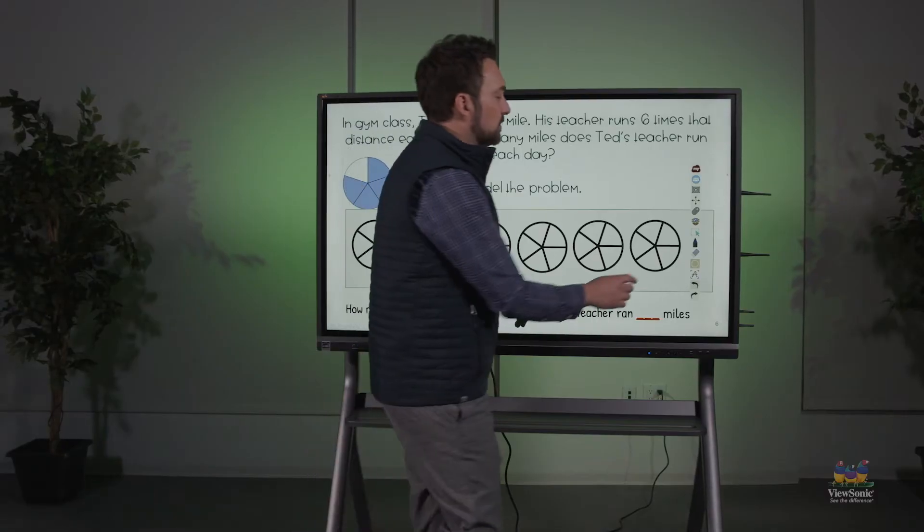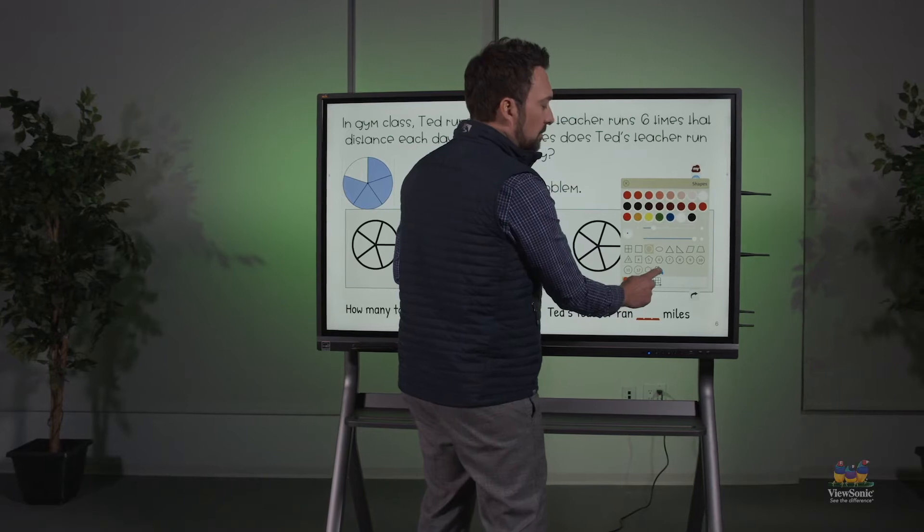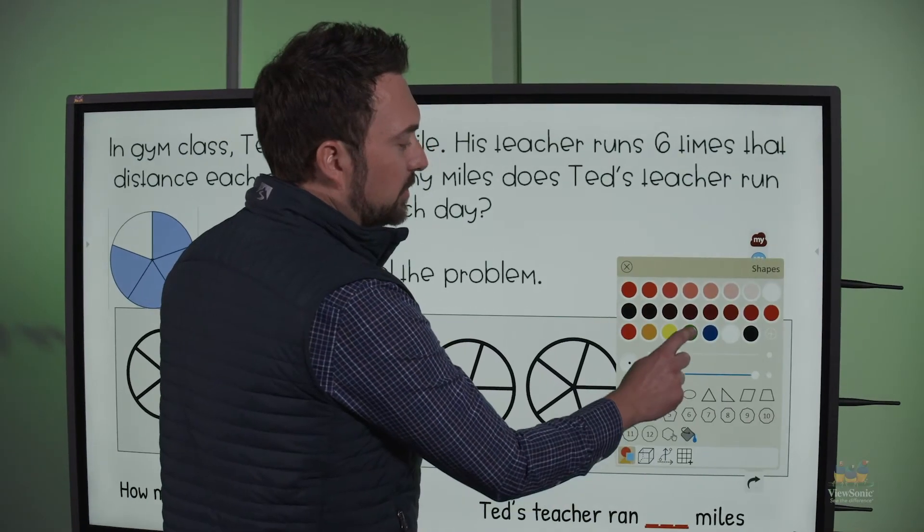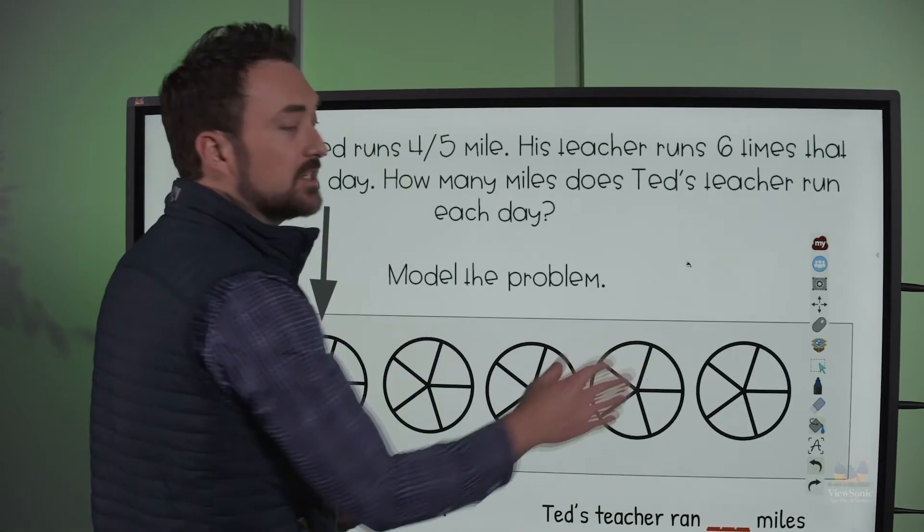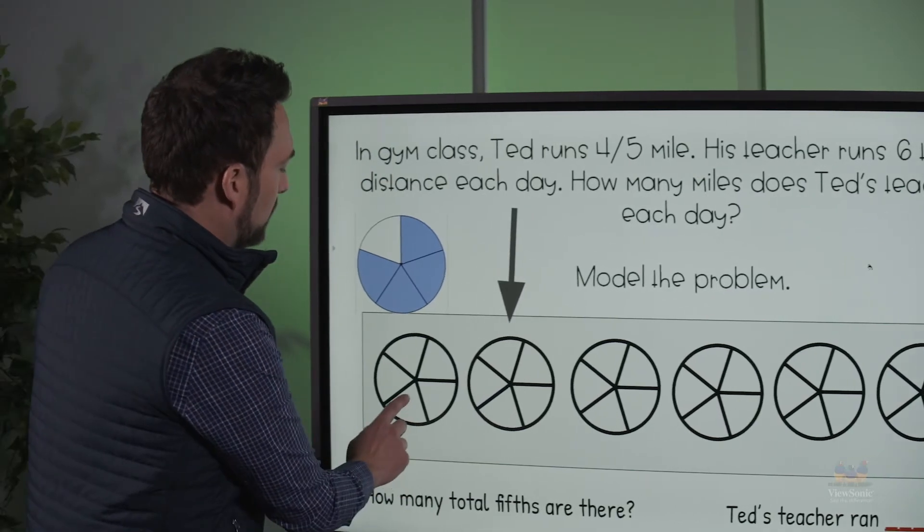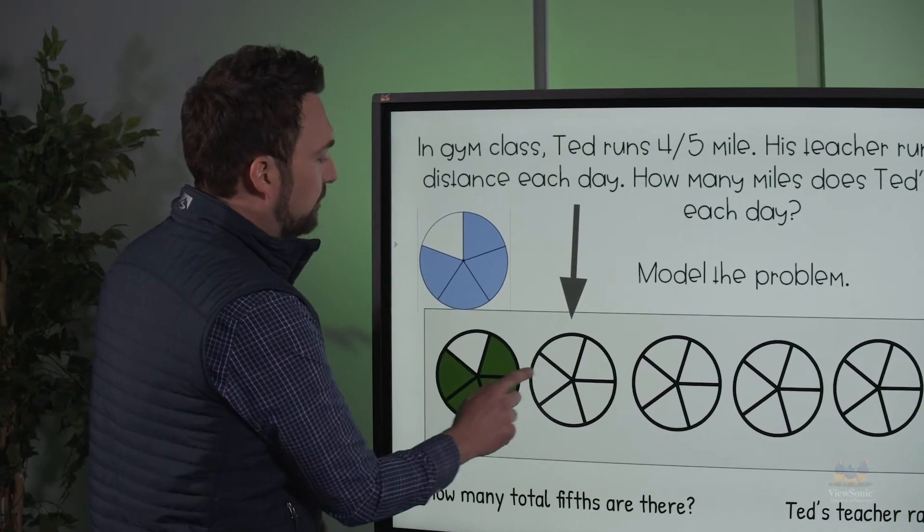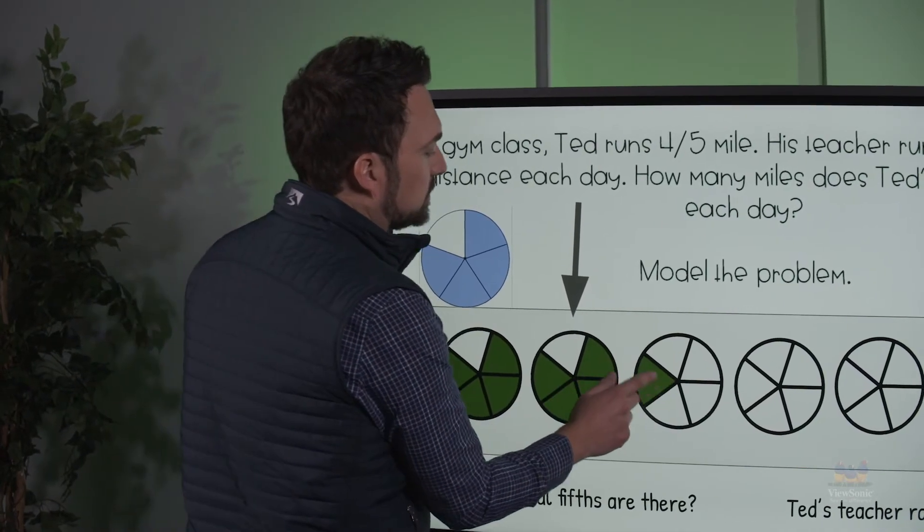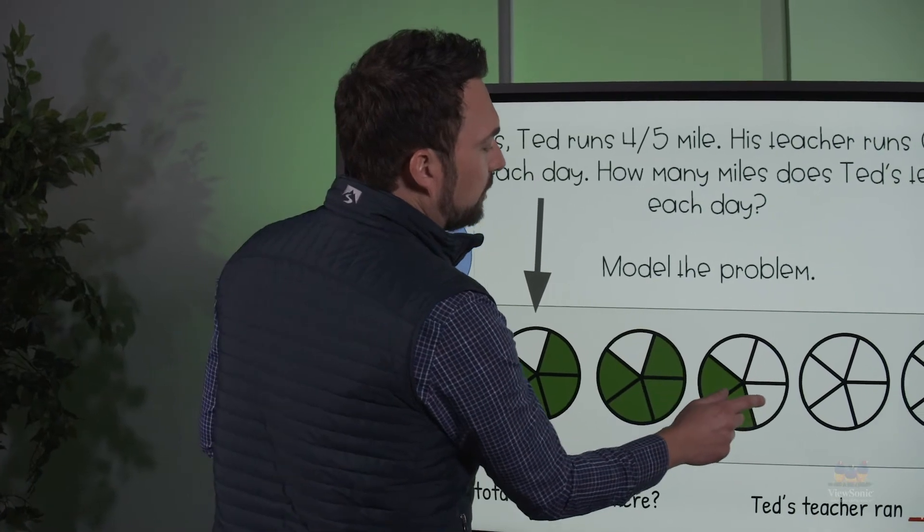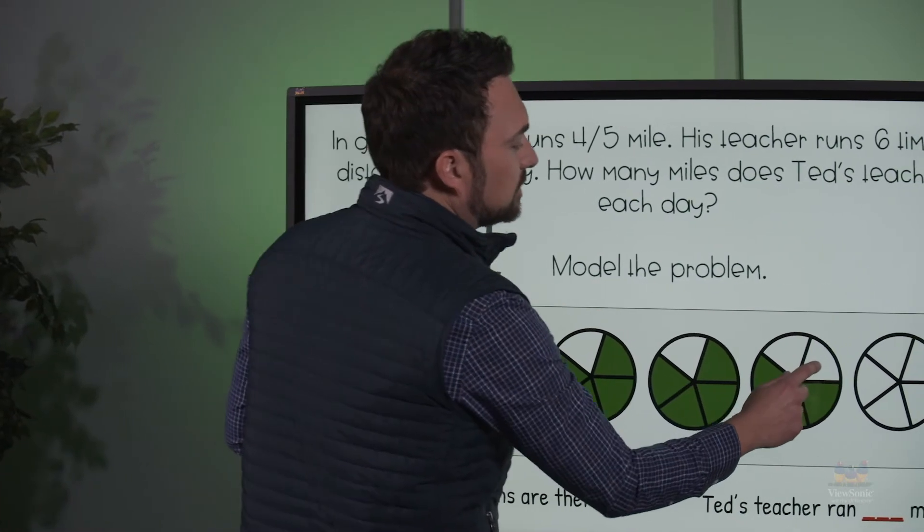I'm going to go back to my shape menu. We're going to choose the paint bucket and then we're going to choose a color like green. This is going to be our fill color, and then we're going to come back and we can fill in each one of these fractions with four-fifths.